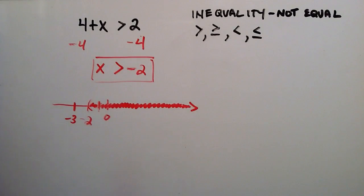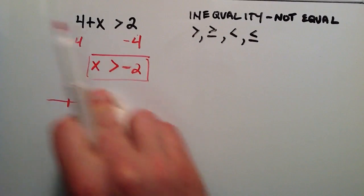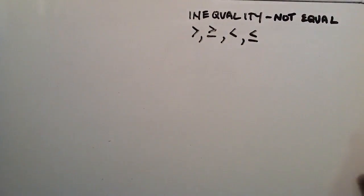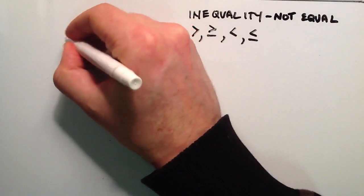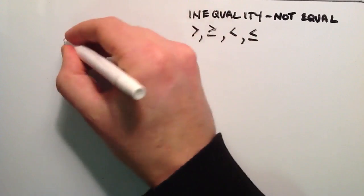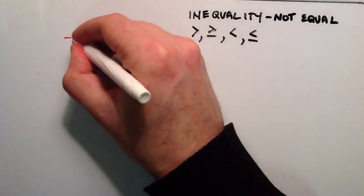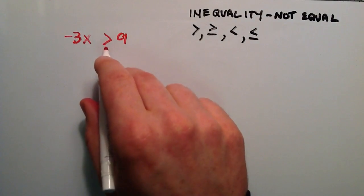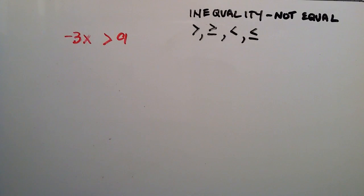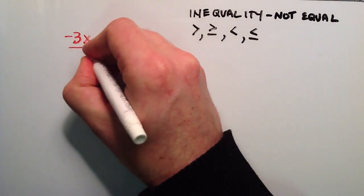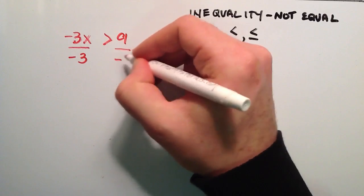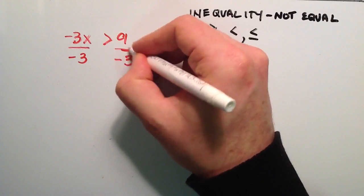Now that I've covered the basics of what that means, let's go ahead and show you what I meant when I said you need to flip the sign when you divide by a negative number. We're going to do a simple example: negative 3x is greater than 9. We're going to treat this as an equal sign, except we're going to flip the sign whenever we multiply or divide by a negative. So we're going to divide the left side by negative 3 to get x by itself, and divide the right side by negative 3 as well.